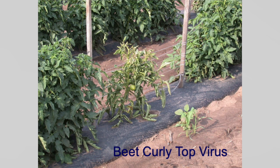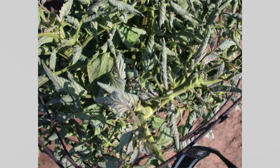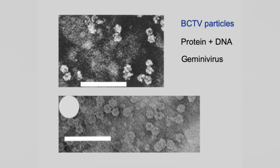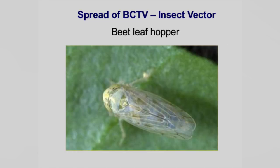One we do have is beet curly top — occasionally you'll see a plant here or there that just doesn't grow and the leaves roll up. It's not herbicide because all the other plants around it look fine. I've had this in my garden; we had it really badly one year about 10-12 years ago. Usually it's just a plant here or there, but you'll see those leaves roll up and the veins on those leaves are purple. The leafhopper spreads it — it doesn't really feed on the tomato plants but just flies on there to see if it's a suitable host, tastes the plant, and if it doesn't like it, moves on and leaves that curly top behind.